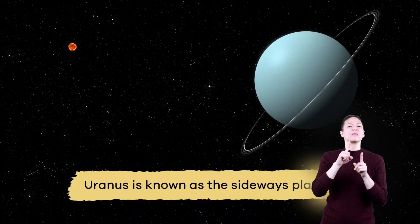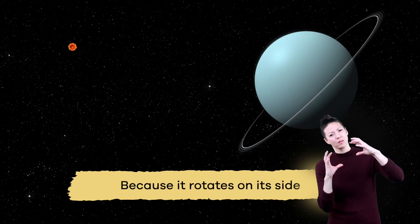Uranus is also known as the sideways planet because it rotates on its side.